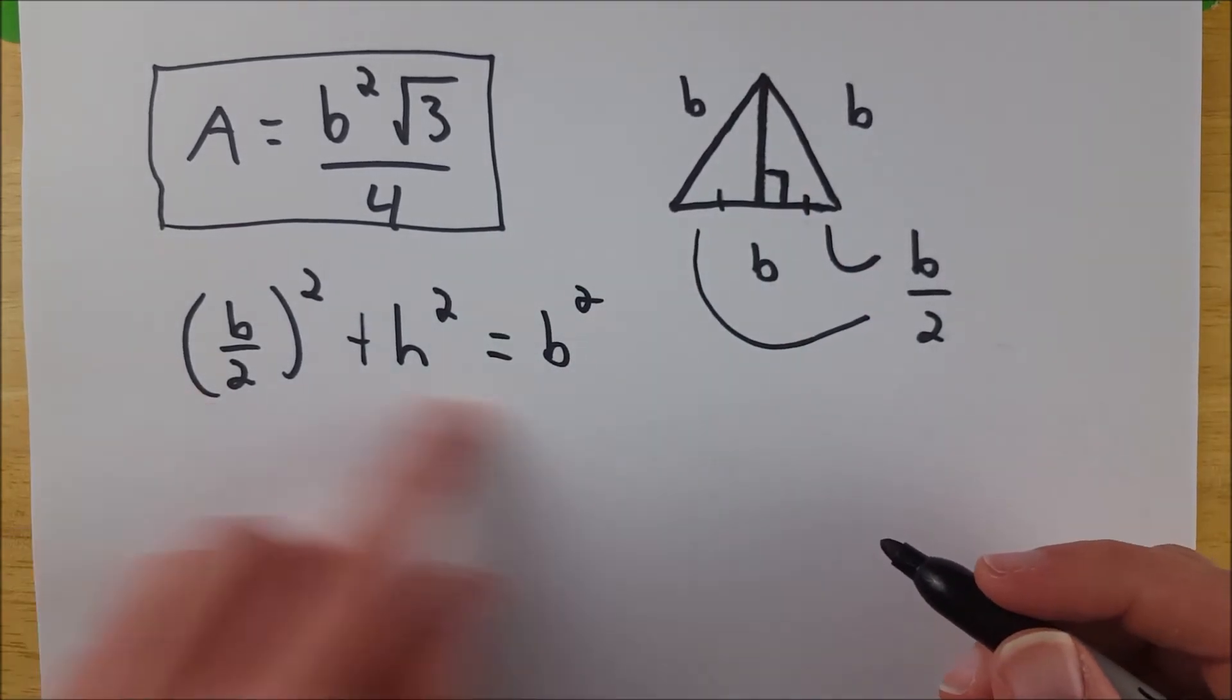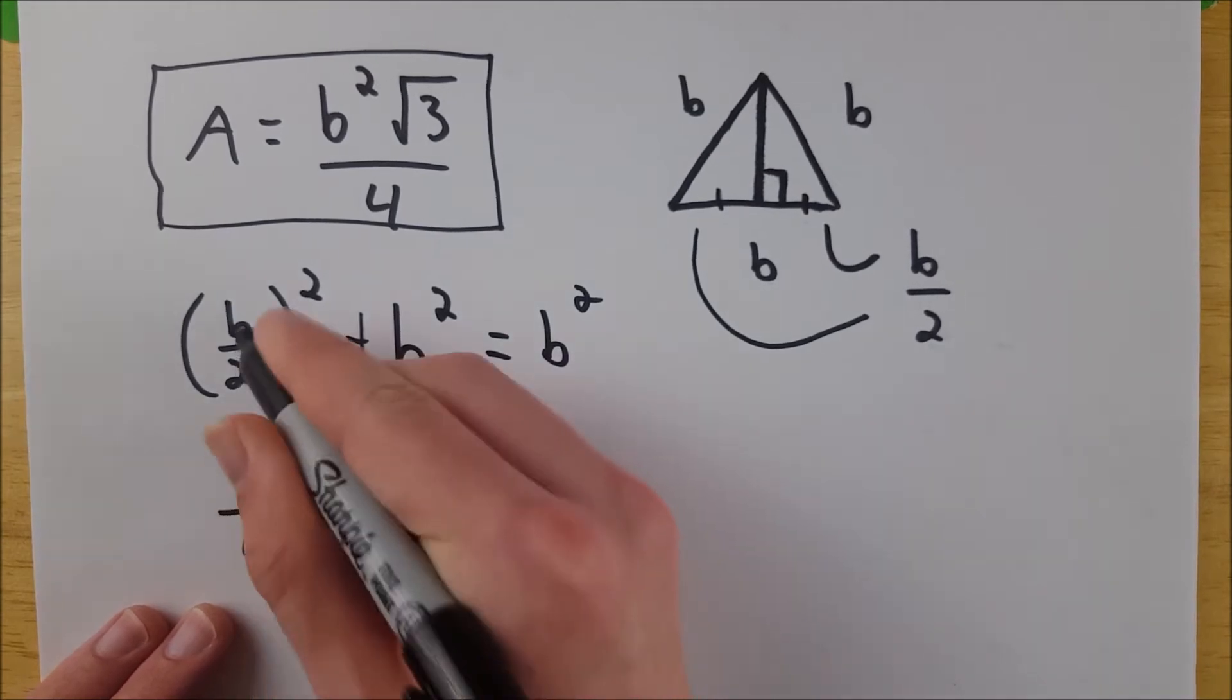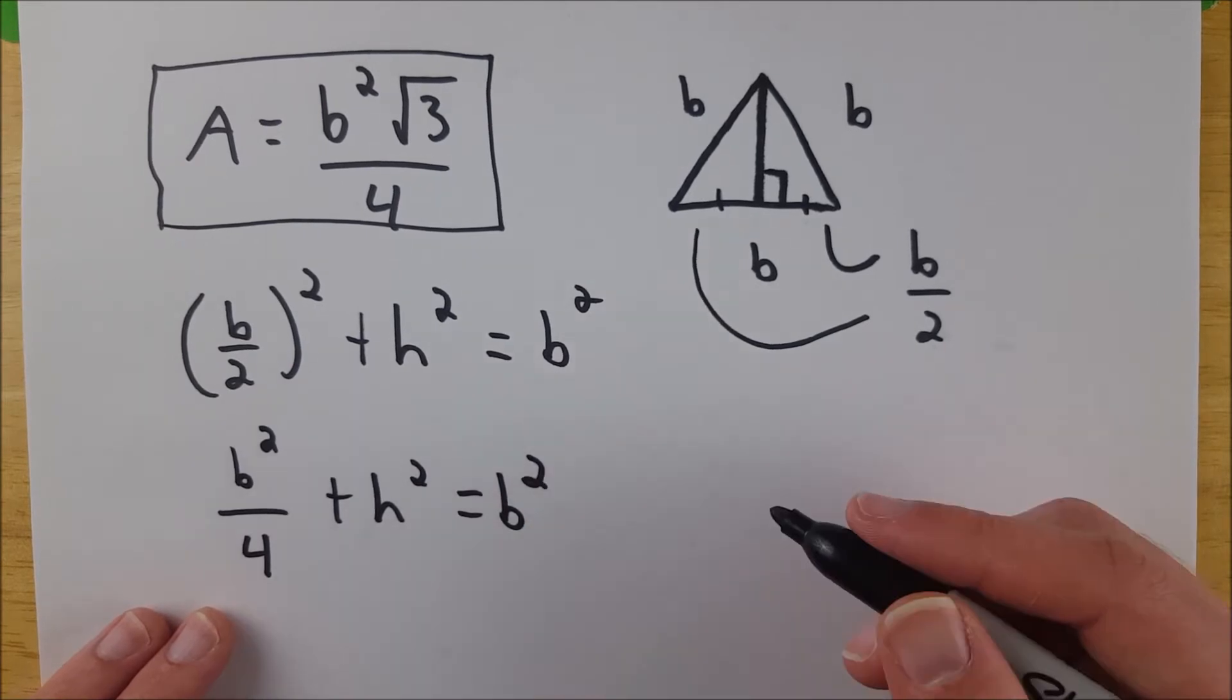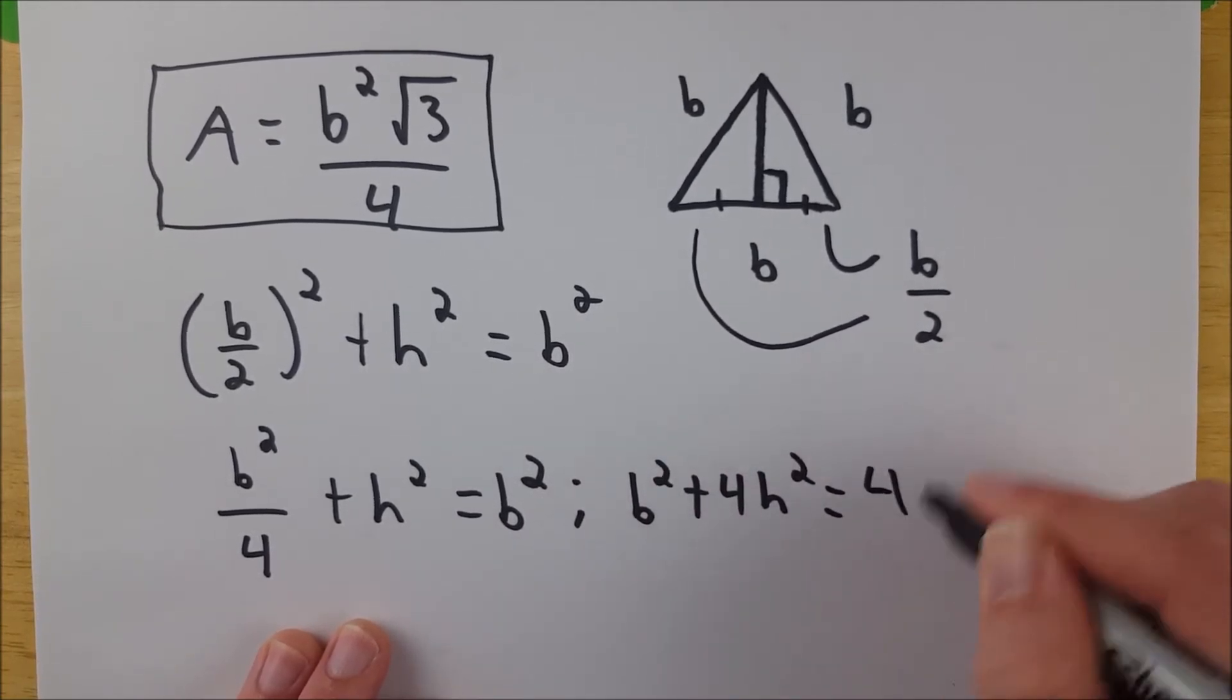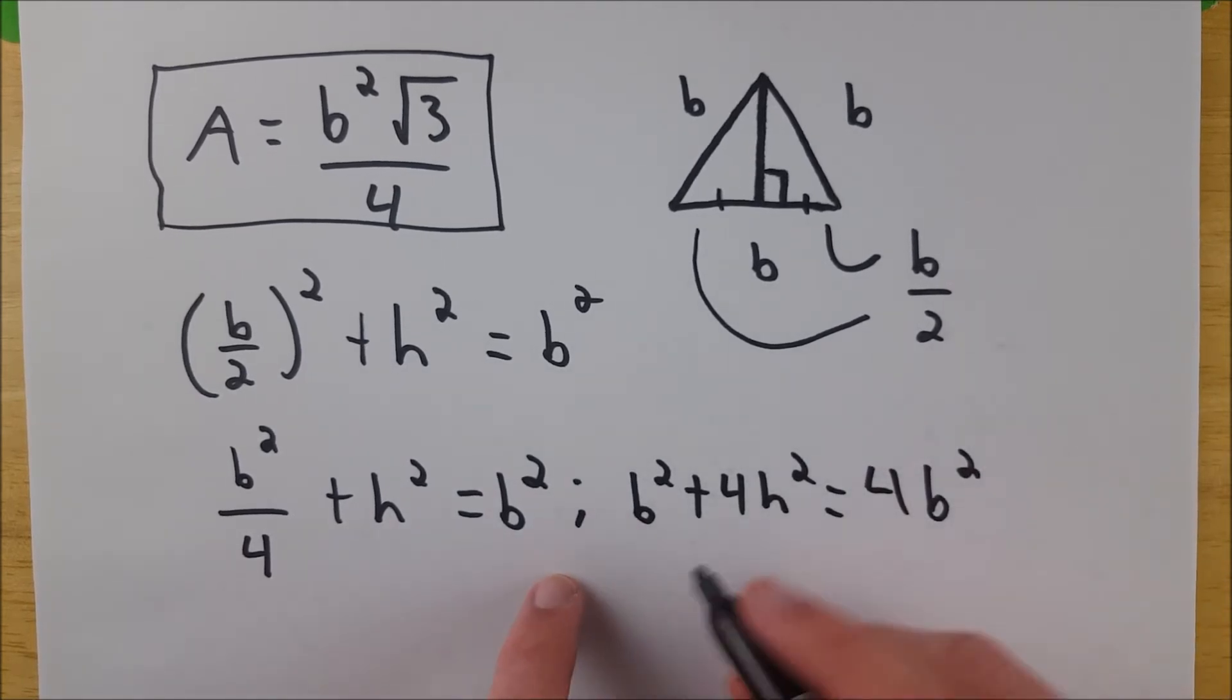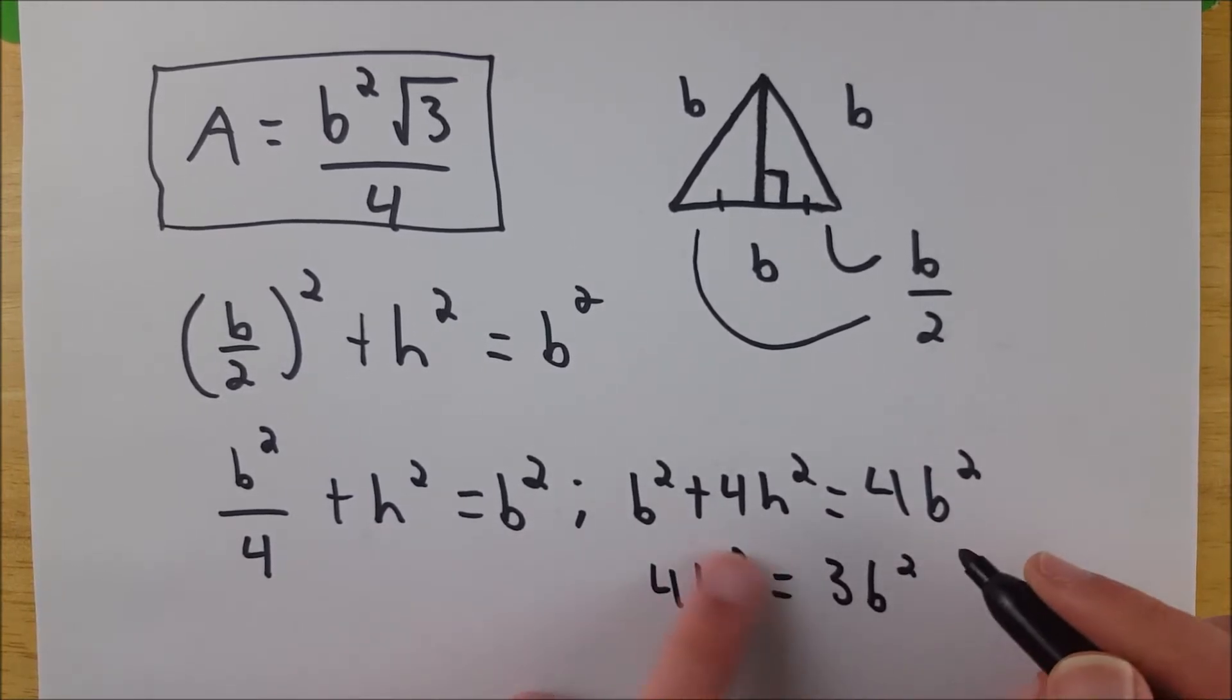So from here, we're going to try and solve for h. So this becomes b squared over 4, squaring that whole term, plus h squared equals b squared. Now we can multiply everything by 4. So we get b squared plus 4h squared equals 4b squared. And then we're going to subtract a b squared. And that's going to give us 4h squared equals 3b squared, subtracting b squared from both sides.